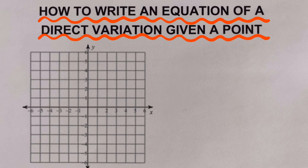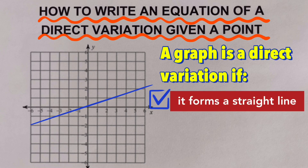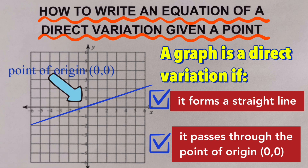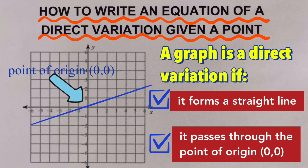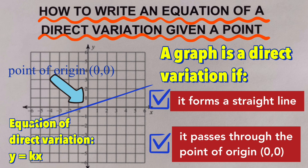Going back, there are two important things to remember in order to tell that a graph is an example of direct variation. First, it has to form a straight line. Second, this line should pass through the point of origin, or (0, 0). These are the two rules that should be met. We also remember that the general equation for every direct variation is y equals kx, where k is the proportionality constant or the constant of variation. Now let's go over some examples.